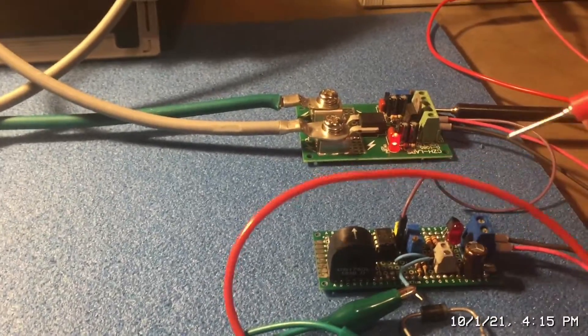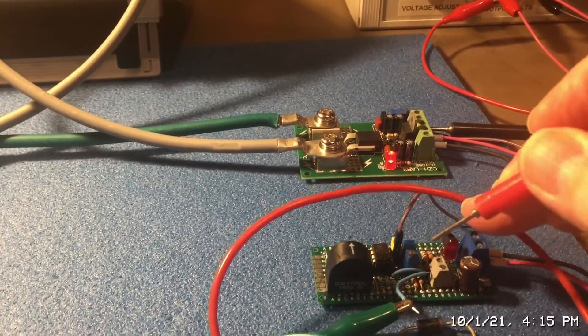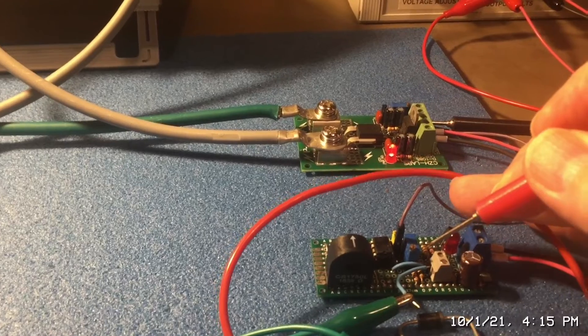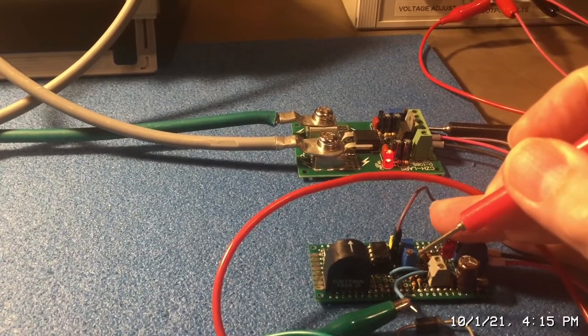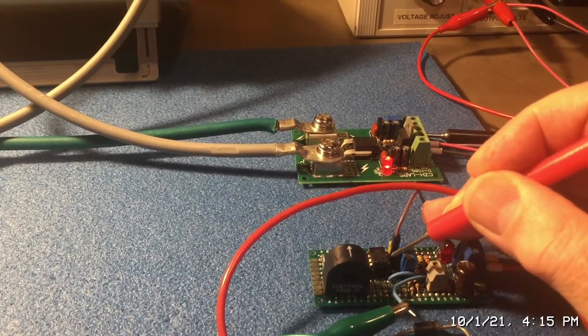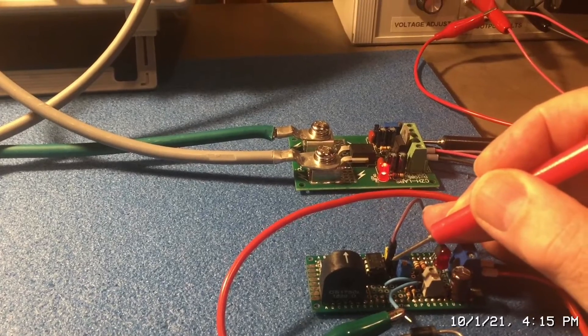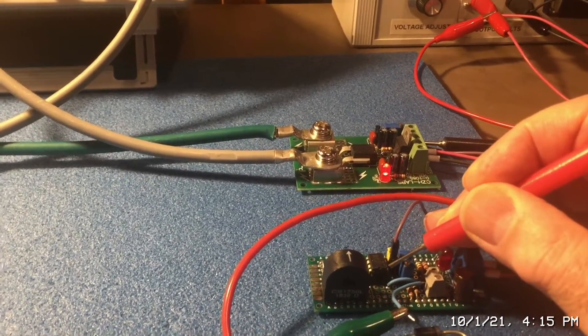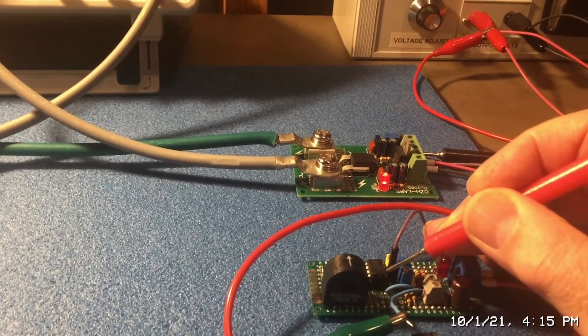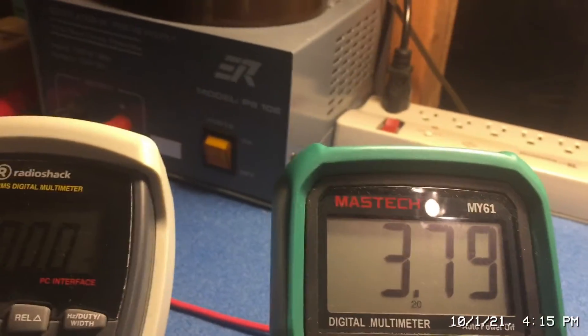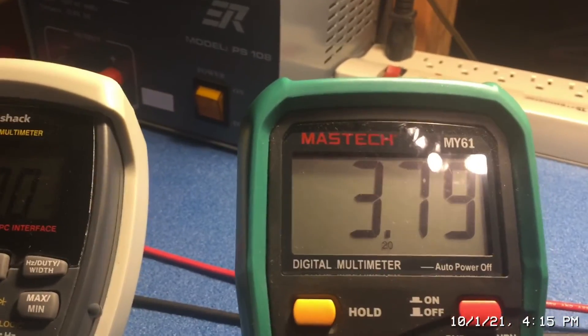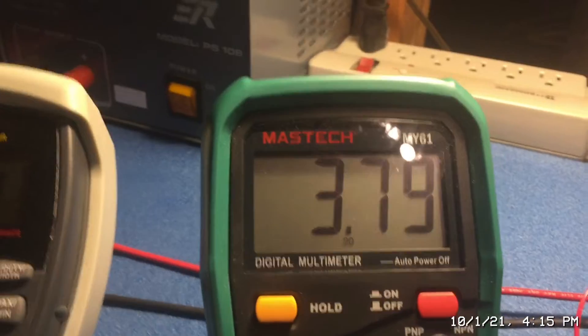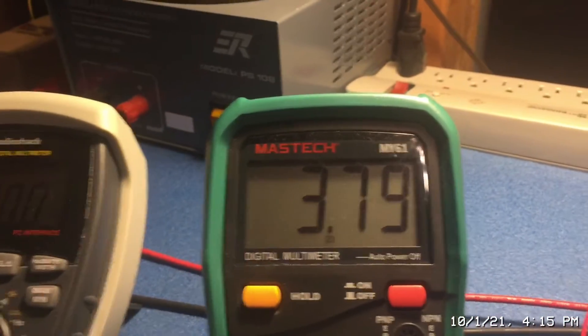Okay so what we have to do is we have to set the reference voltage on the comparator to be slightly above that and I've already preset this so remember from the schematic that pin 2 is the reference voltage so I'm going to go ahead and just measure on pin 2 here and you can see that I'm measuring 3.79 so I'm slightly above the voltage from the module.